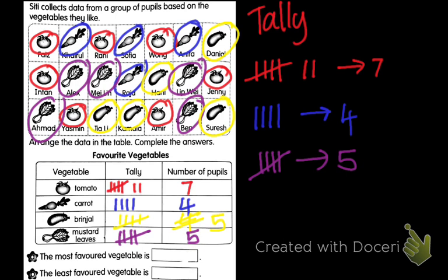The most favorite vegetable is tomato. Write down here: tomato. The least favorite vegetable is carrot. Write down: carrot.